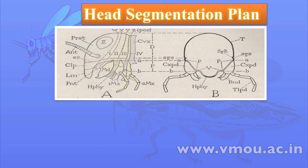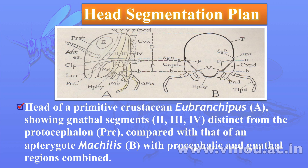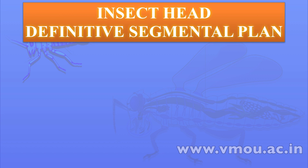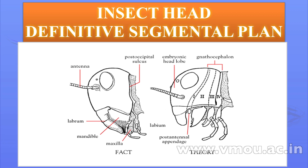In insects such as Machilis, the segmentation can be seen: the antennal is first, then mandible, maxillipede or maxilla, and then the third is the labium. One can understand that the protocephalon segment has some primary three-segment body followed by the gnathocephalon. However, the protocephalon of a crustacean differs a little from that of an evolved insect such as Machilis. The definite segmentation plan of an insect includes both fact and theory.